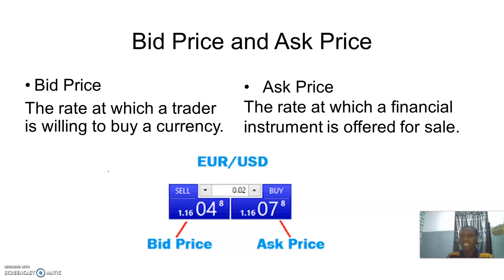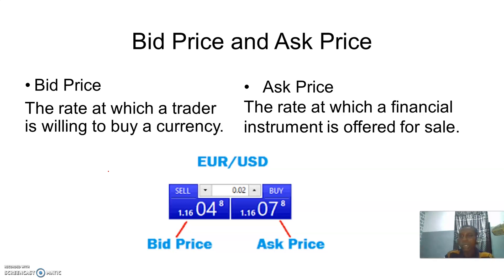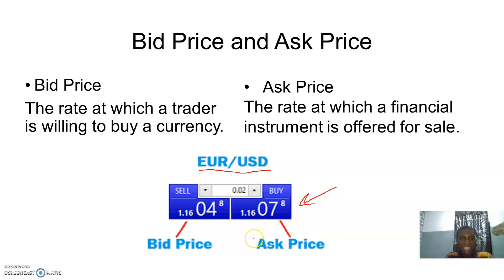The bid price is the rate at which a trader is willing to buy a currency. When you are selling a currency, you are selling at the bid price. The ask price is the rate at which a financial instrument — the currency — is offered for sale. Looking at this chart on EUR/USD, if we are buying this currency, we are buying at the ask price, which is the price at which that instrument is offered for sale. So if you click buy, you are buying at the selling price of the broker.